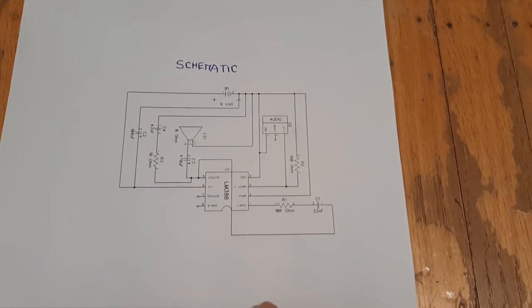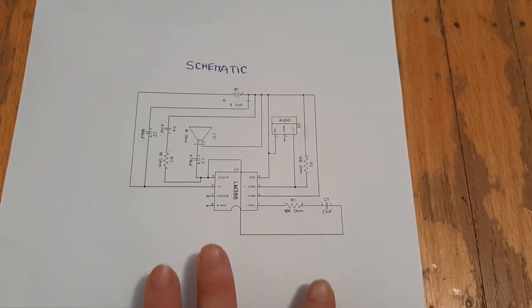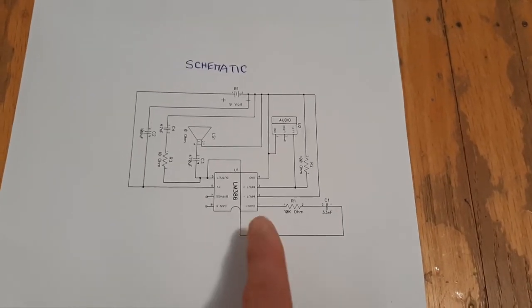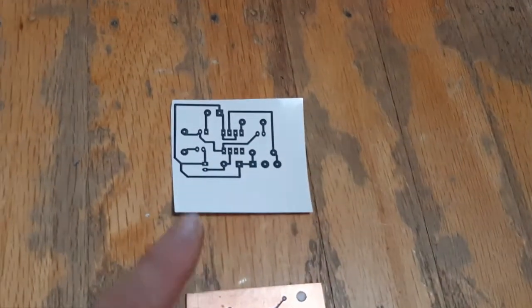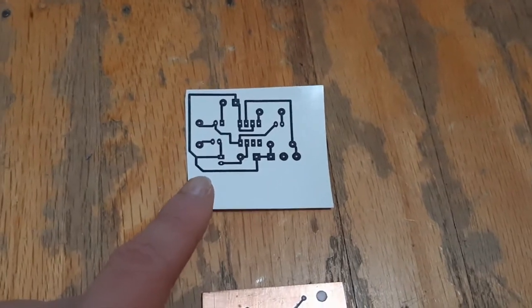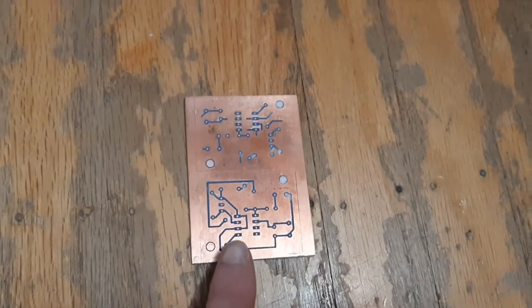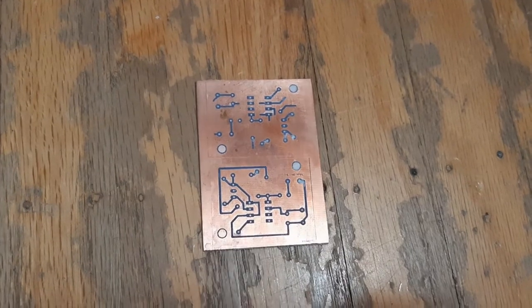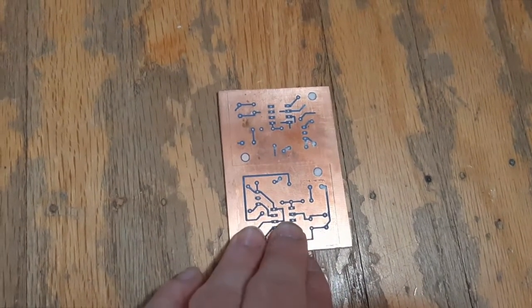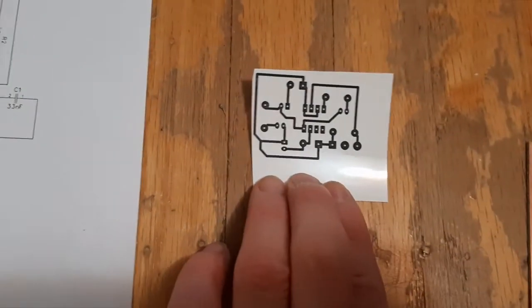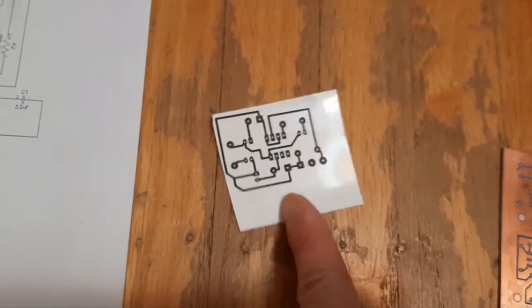In the last video we talked about how to use DipTrace to create a schematic. In this video we're going to take that schematic and turn it into a circuit board pattern which we can print onto glossy paper, then use the heat press to melt it onto our copper board so that we can begin making our custom circuit board.